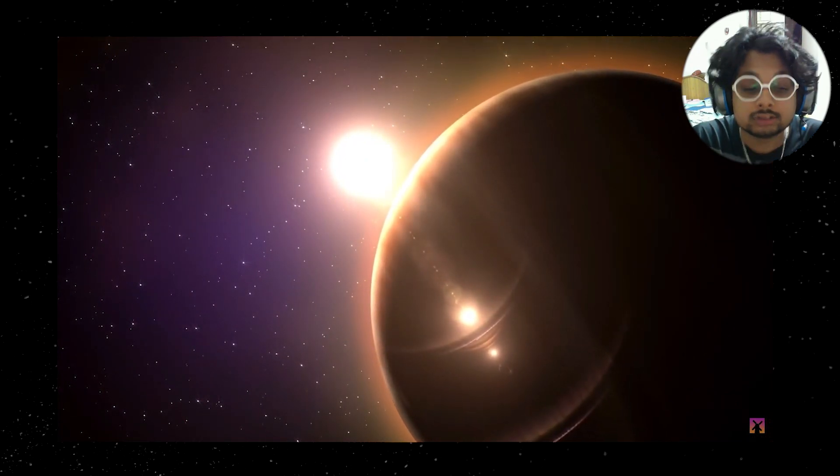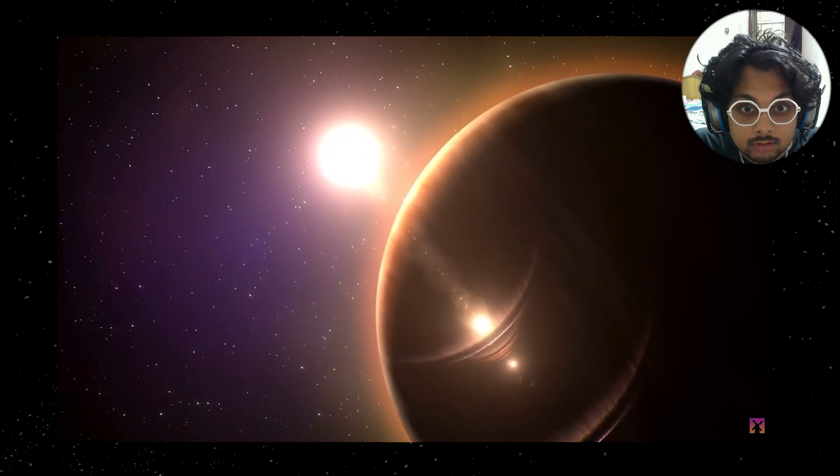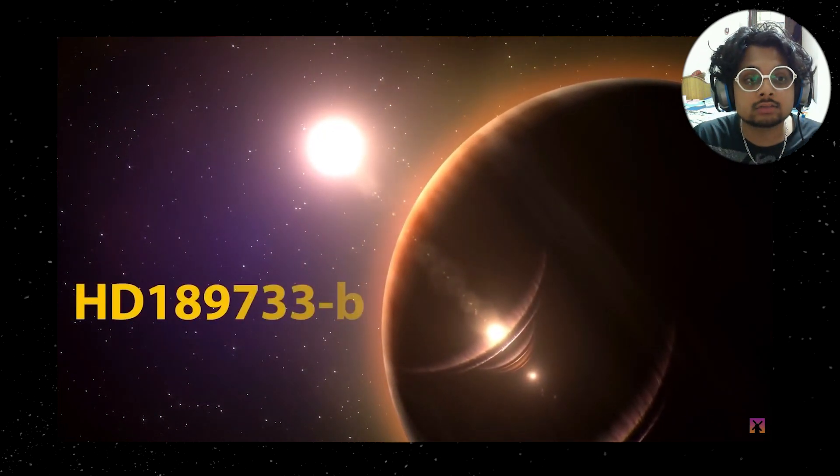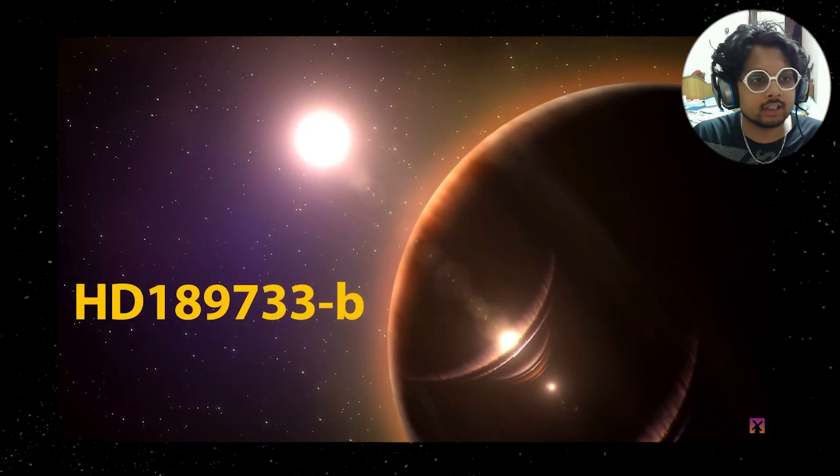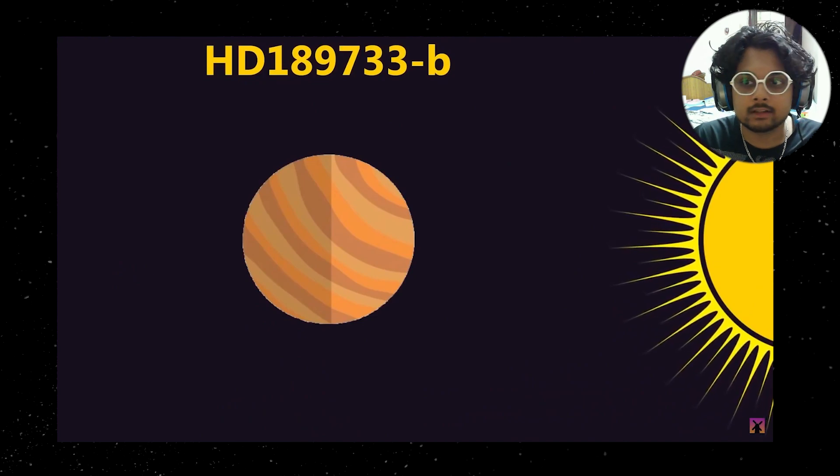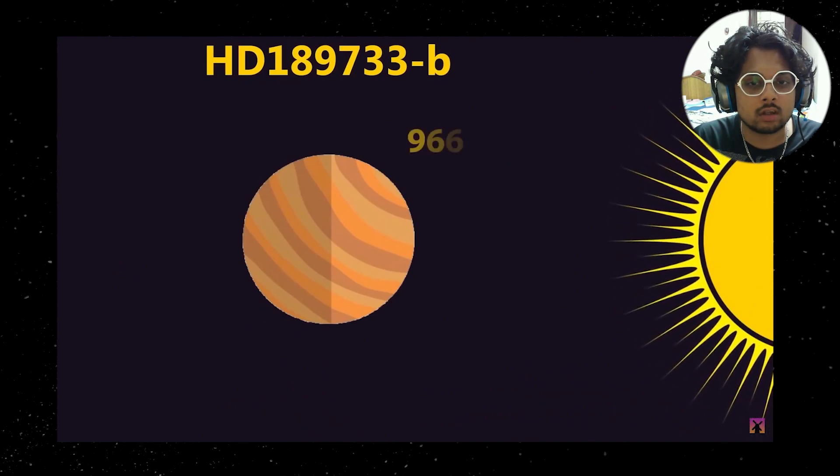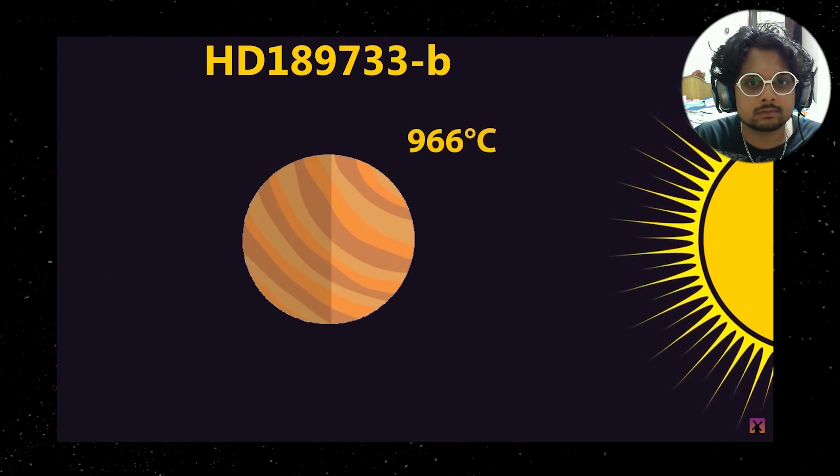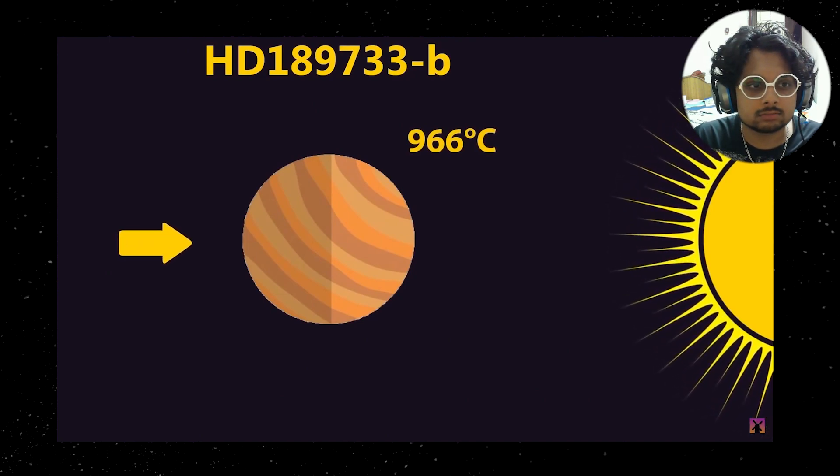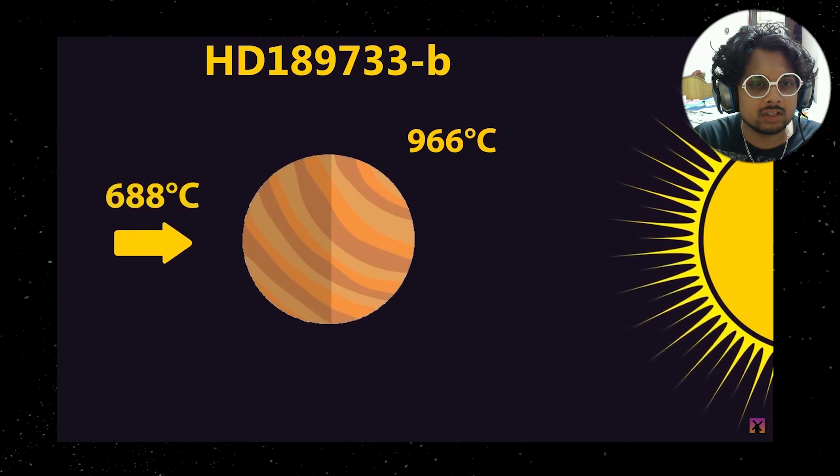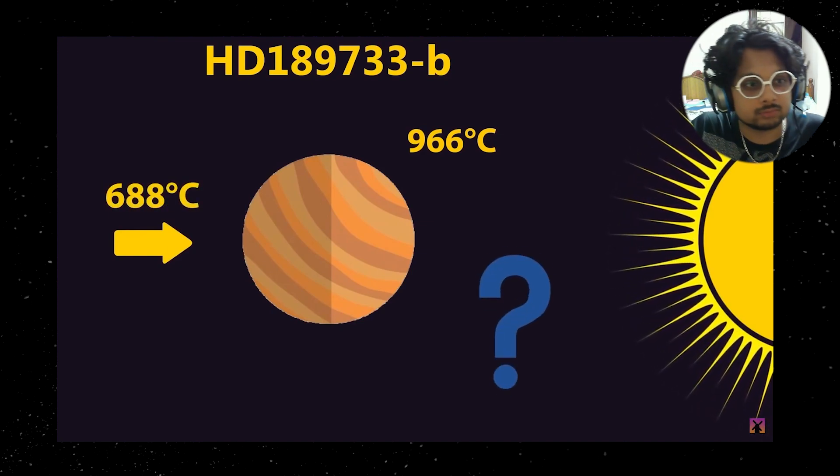But even this storm pales in comparison to the mightiest wind. Even this is not extreme in the entire universe. The wind on the planet HD 80606B. Another HD. This is a gas planet with one side always facing its star where temperatures can reach a scorching 966 degrees Celsius. It's not that bad. On the dark side, it's still very hot at 688 degrees Celsius.